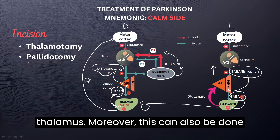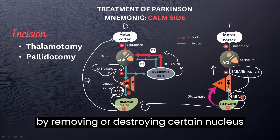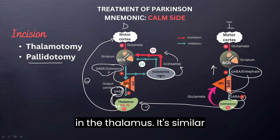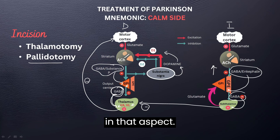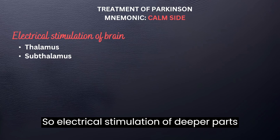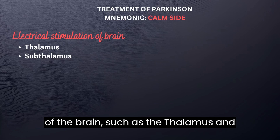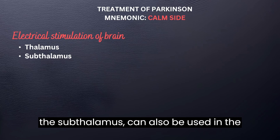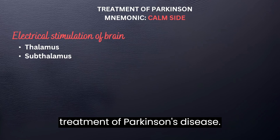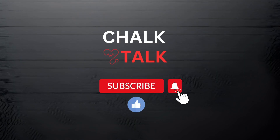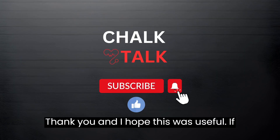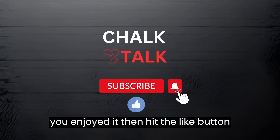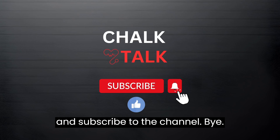This can also be done by removing or destroying certain nuclei in the thalamus — thalamotomy — which is similar in principle. Electrical stimulation of deeper parts of the brain, such as the thalamus and subthalamus, can also be used in the treatment of Parkinson's disease. Thank you, and I hope this was useful. If you enjoyed it, hit the like button and subscribe to the channel.